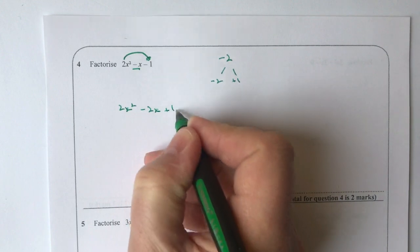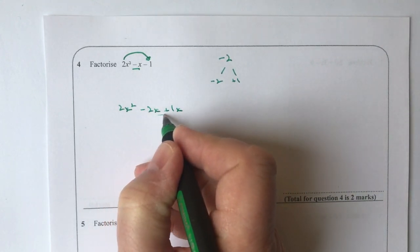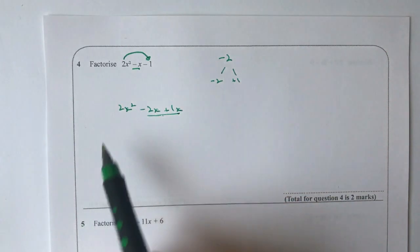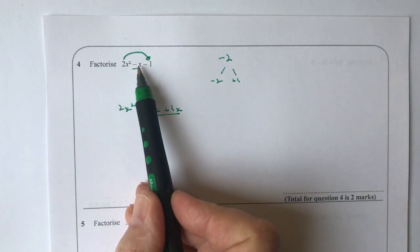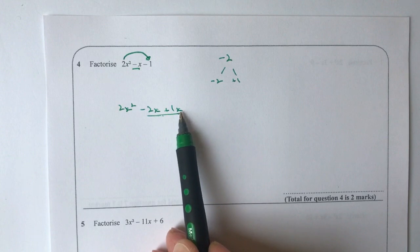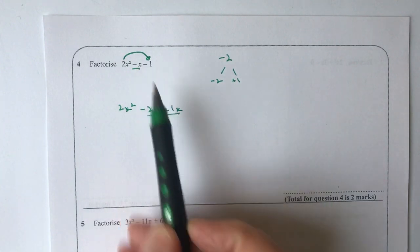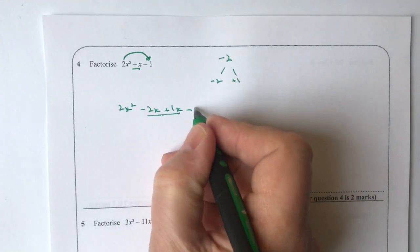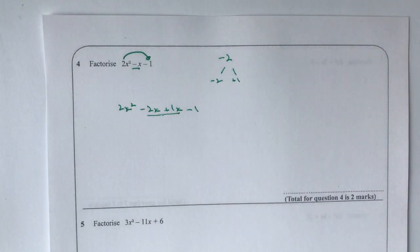So basically this part here is actually minus x, so minus 2x plus 1x will give me minus x, and then I've got minus 1 on the end.